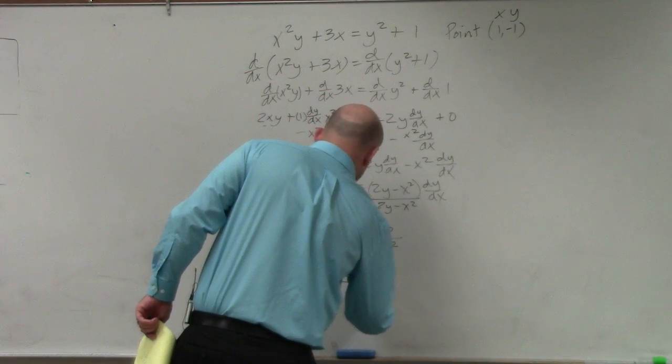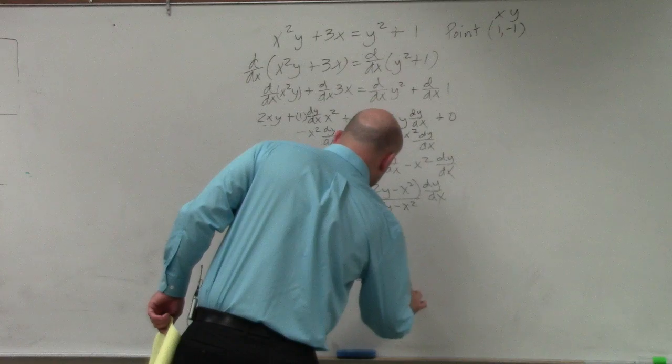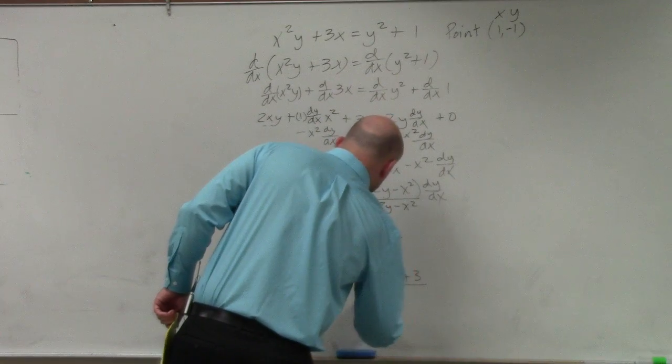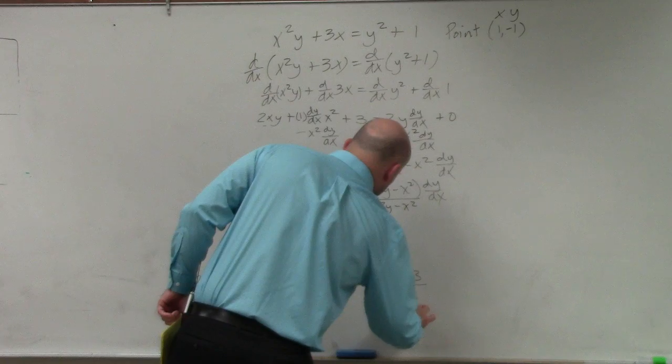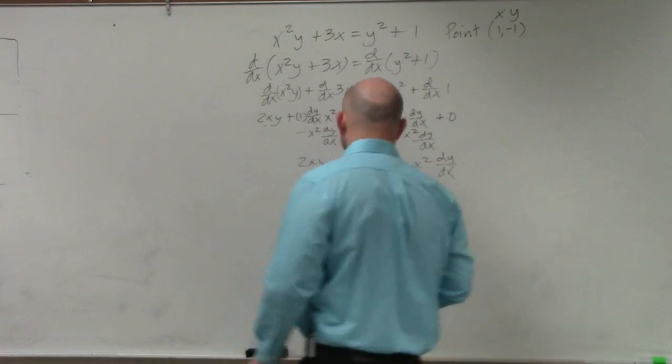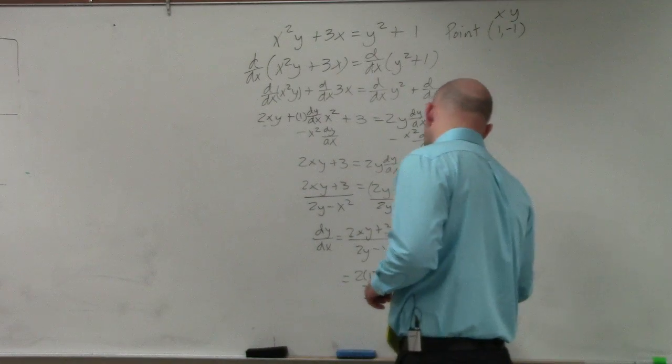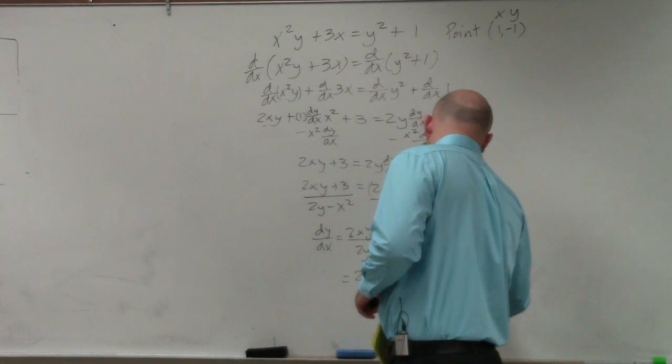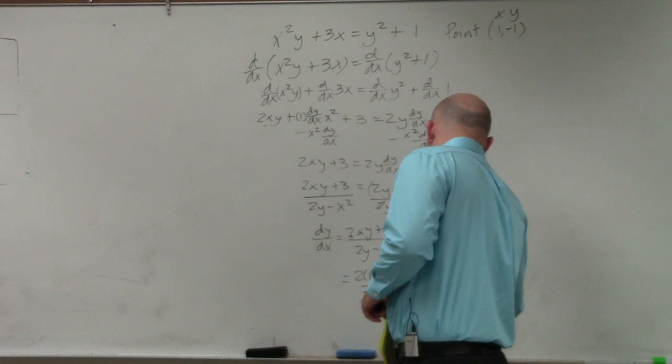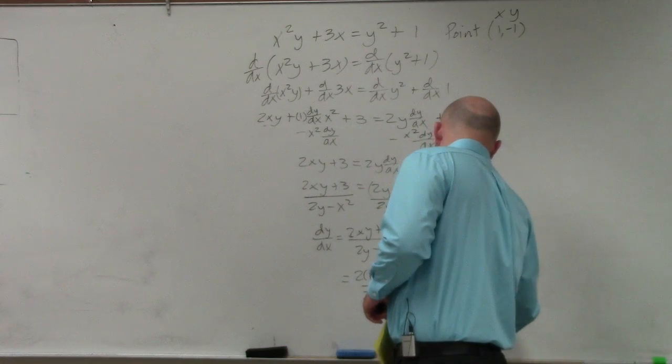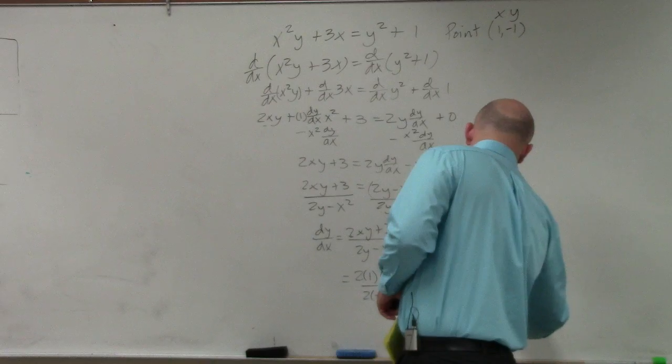So I have 2(1)(-1) + 3 all over 2(-1) - (1)². Therefore, I end up with -2 + 3 over -2 - 1, which equals 1 over -3.